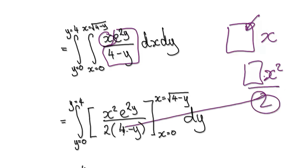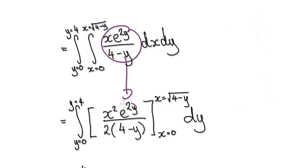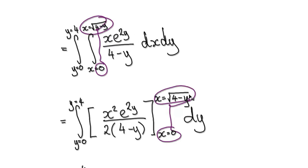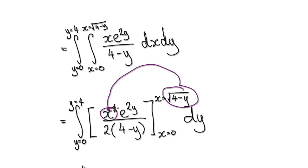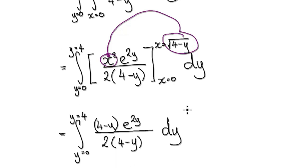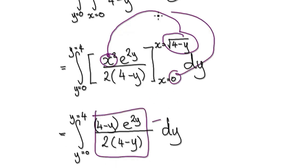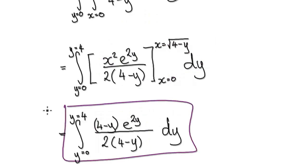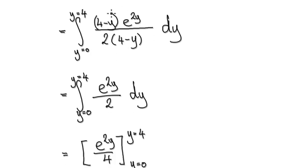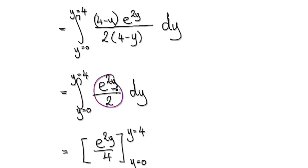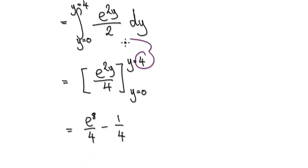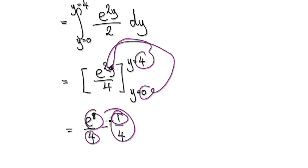That's where the two comes from. We're integrating from 0 to √(4 − y), so we substitute the upper limit in. Substituting zero gives zero, so we just take the upper limit result. Tidying up, the like terms cancel, and integrating with respect to y gives e to the power of 8 over 4, minus the value at zero. The overall final answer is e⁸/4 minus the constant term.